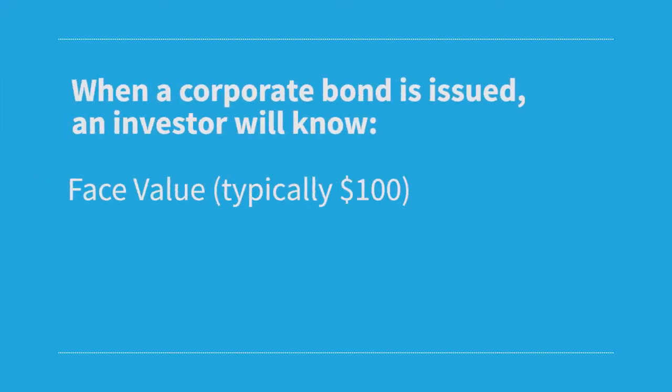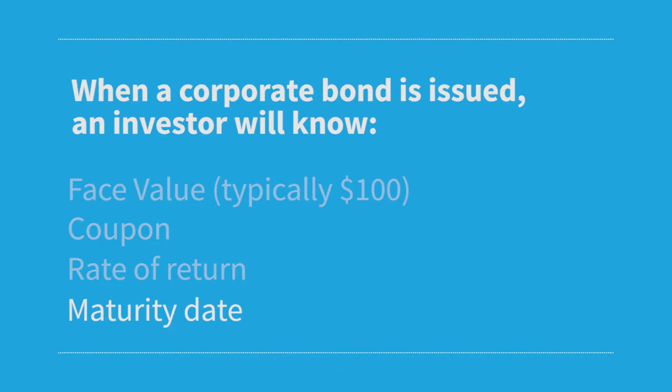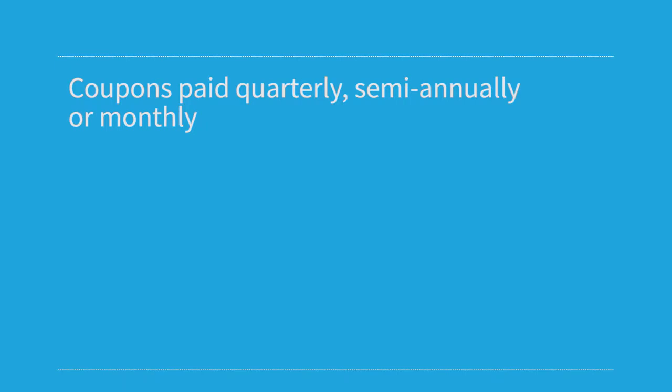Other parts of the bond that are known at the onset or issuance include the coupon, the rate of return, and also the maturity date. Bonds typically have a coupon payment period of either quarterly or semi-annual — every six months — although some coupons can be paid on a monthly basis.